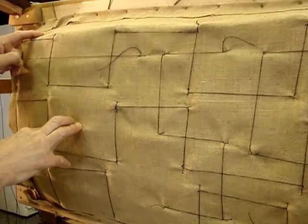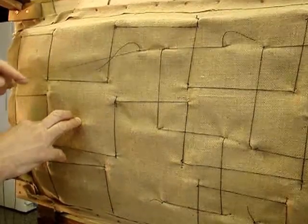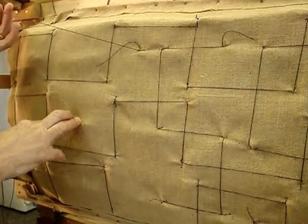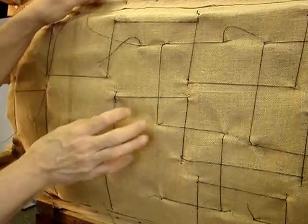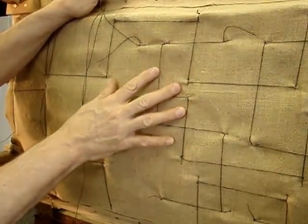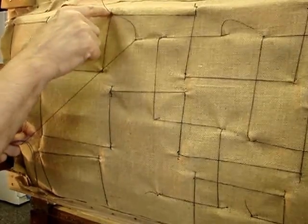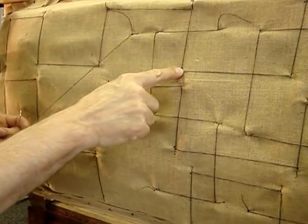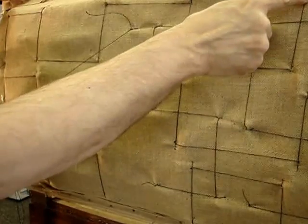What you're seeing in these shots are the Holben stitches that are lashing the springs to the burlap topper. Basically what we're doing is showing what a Holben stitch is. The Holben stitch is this configuration—it's actually a locking stitch around the orbit of the spring.